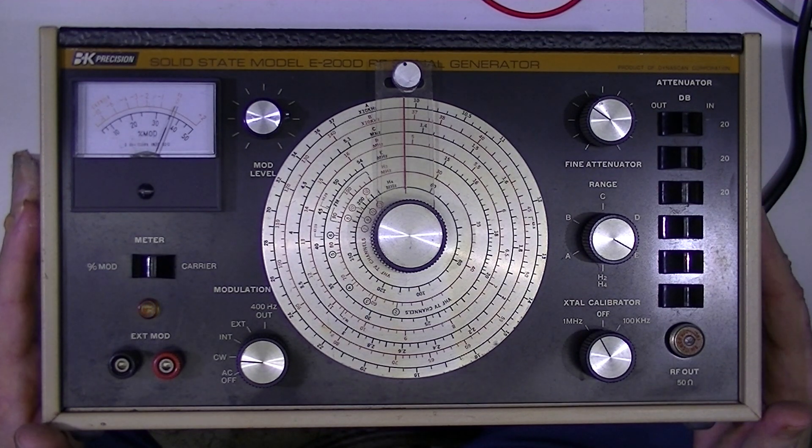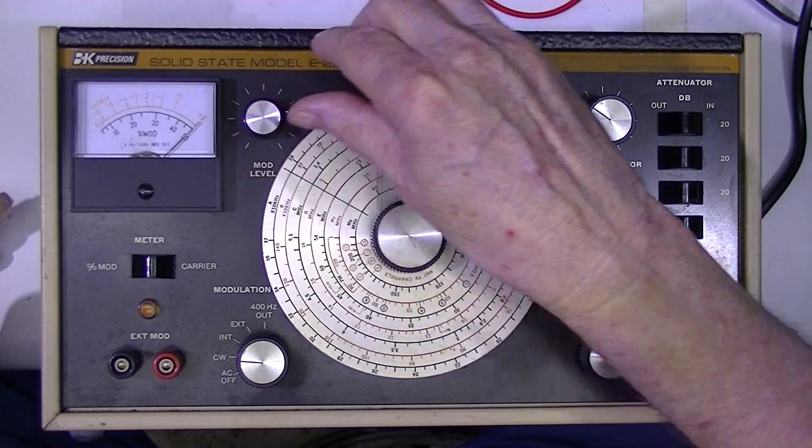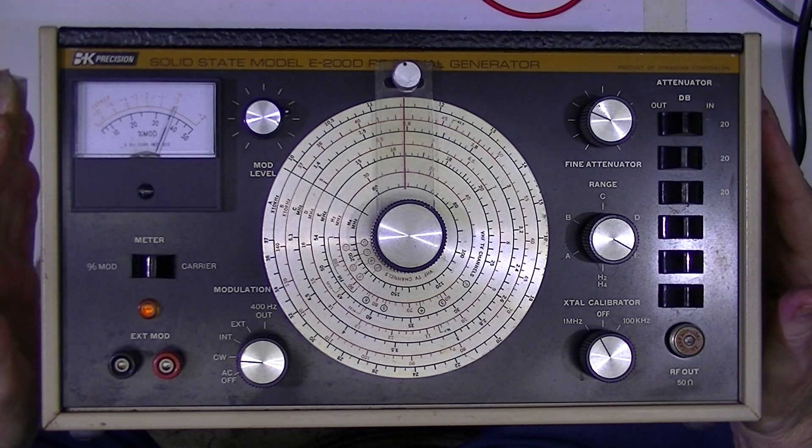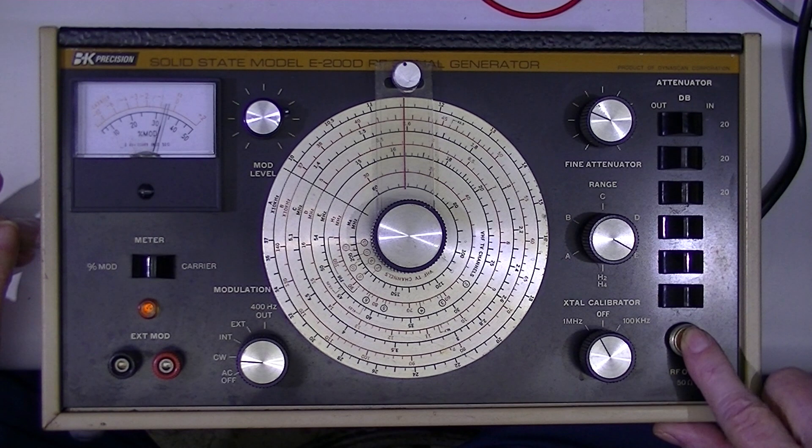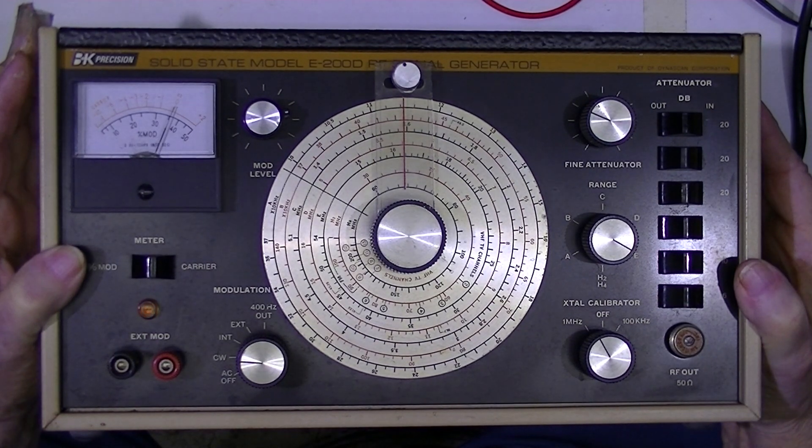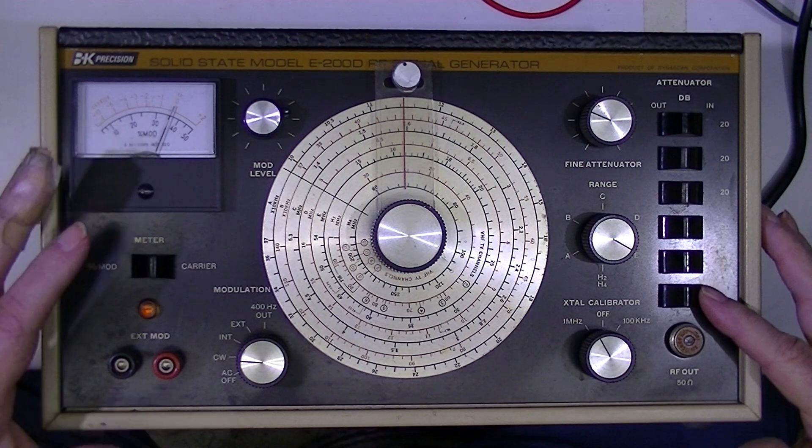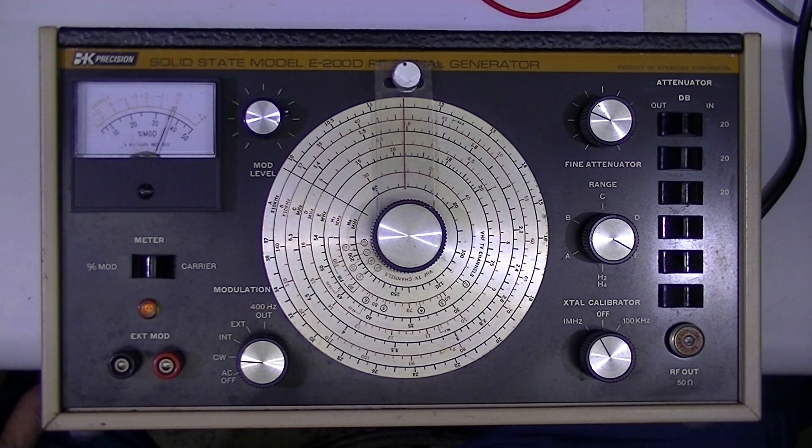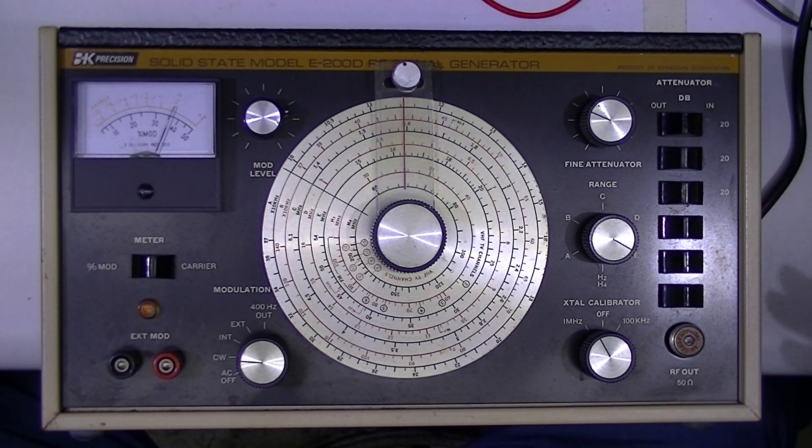The thing that made this such a very good signal generator is that it's extremely well shielded. Which means the only RF that escapes from this box escapes through the output connector. Modern signal generators, a lot of them, have plastic cases and are not very well shielded. And of course, good shielding negates the purpose of having all these attenuators and adjustable output. If there's radiation from the box itself, who knows whether the device under test is receiving RF from this connector or RF in leakage from the box.